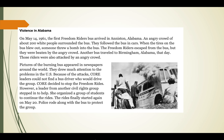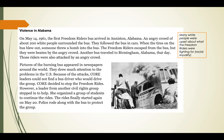The section 'Violence in Alabama' - I think this connects to what happened with the bus. On May 14th, 1961, the first freedom riders' bus arrived in Anniston, Alabama. An angry crowd of about 200 white people surrounded the bus and followed it in cars. When the tires blew out, someone threw a bomb into the bus. The freedom riders escaped but were beaten by the angry crowd. Another bus traveled to Birmingham, Alabama that day - those riders were also attacked. Pictures of the burning bus appeared in newspapers around the world, drawing much attention to the problems in the U.S.